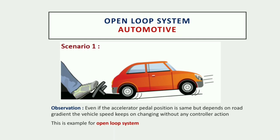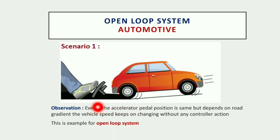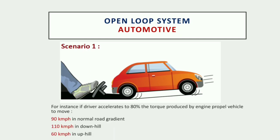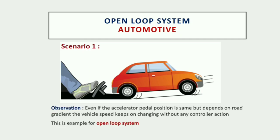The observation here is: even if the accelerator pedal position is the same, the vehicle speed keeps changing depending on the road gradient, without any controller action. This is a good example of an open loop system.